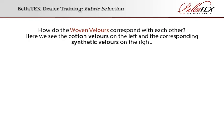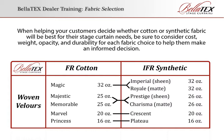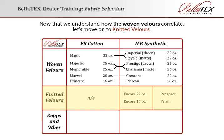Here we see the cotton velours on the left and the corresponding synthetic velours on the right. When helping your customers decide whether cotton or synthetic fabric will be best for their stage curtain needs, be sure to consider cost, weight, opacity, and durability for each fabric choice to help them make an informed decision. Now that we understand how the woven velours correlate, let's move on to knitted velours.